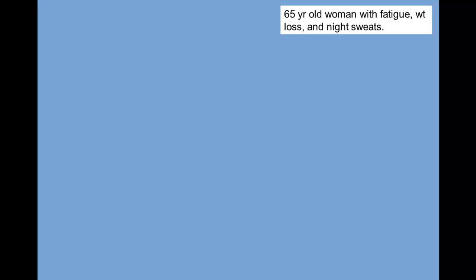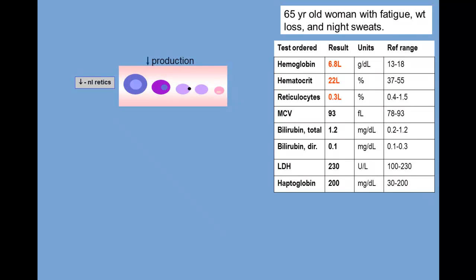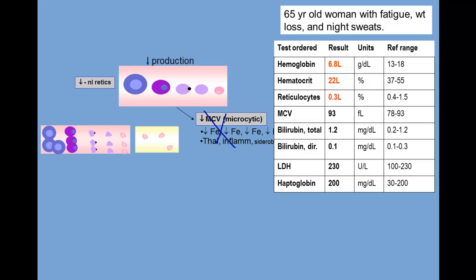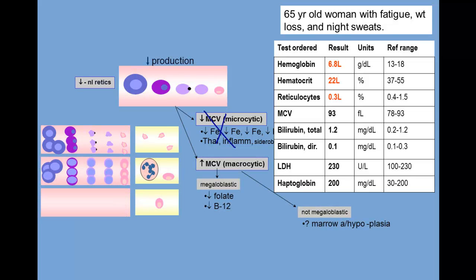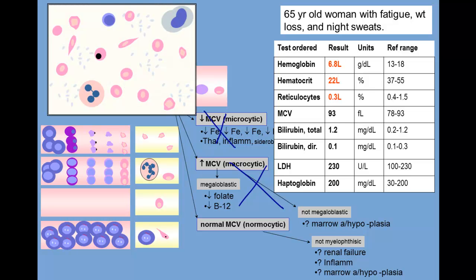A 65-year-old woman presents with fatigue, weight loss, and night sweats — an ominous set of symptoms. Her test results show an anemia with a low reticulocyte count, putting her in the decreased production side of the equation. The MCV is normal, so it's not microcytic anemia like iron deficiency, nor a macrocytic anemia. She falls into the category of normocytic production defects. The peripheral smear showed teardrop and nucleated red cells, characteristic of myelophthisic anemia. This turned out to be tuberculosis, with granulomas visible in the marrow.